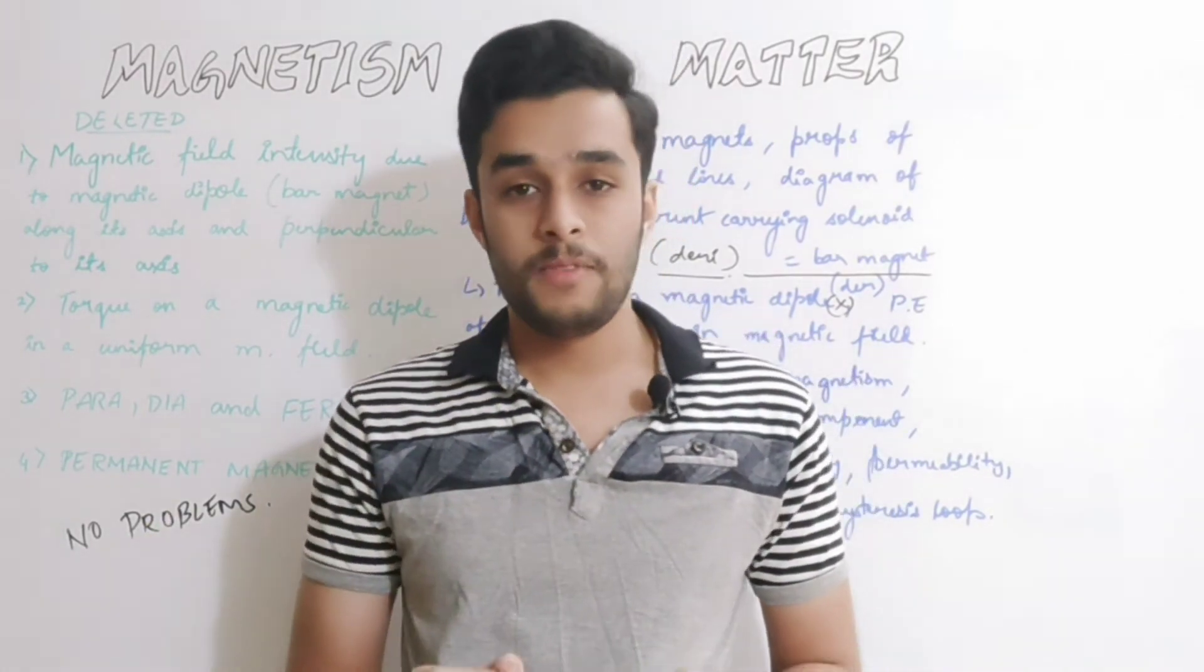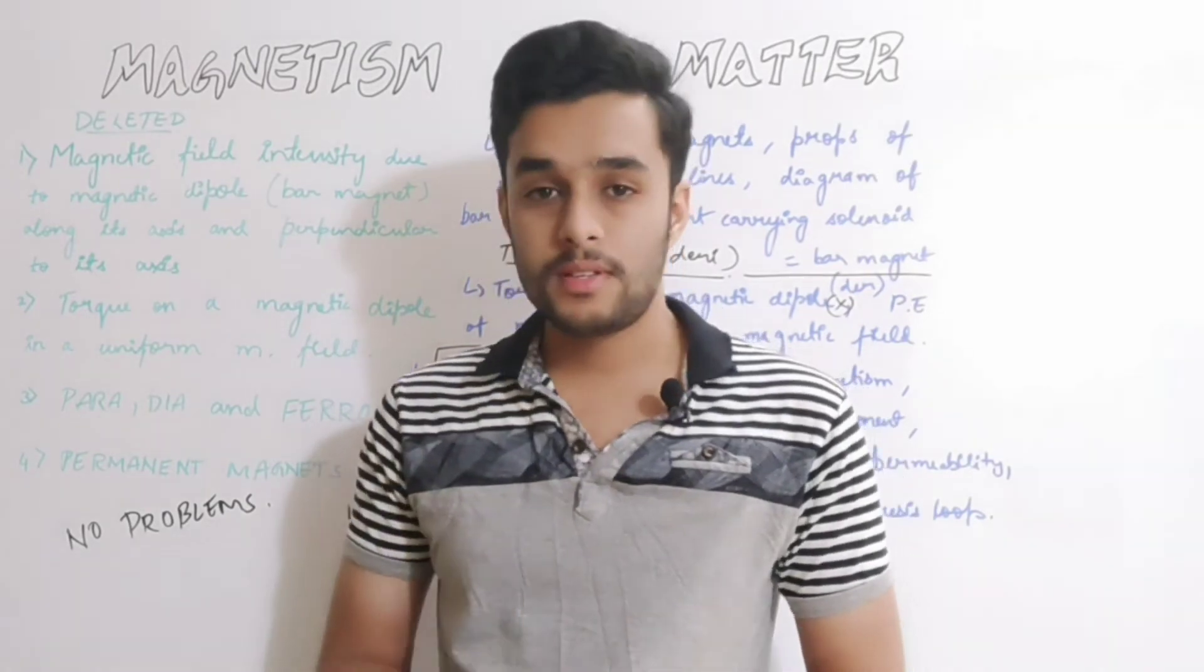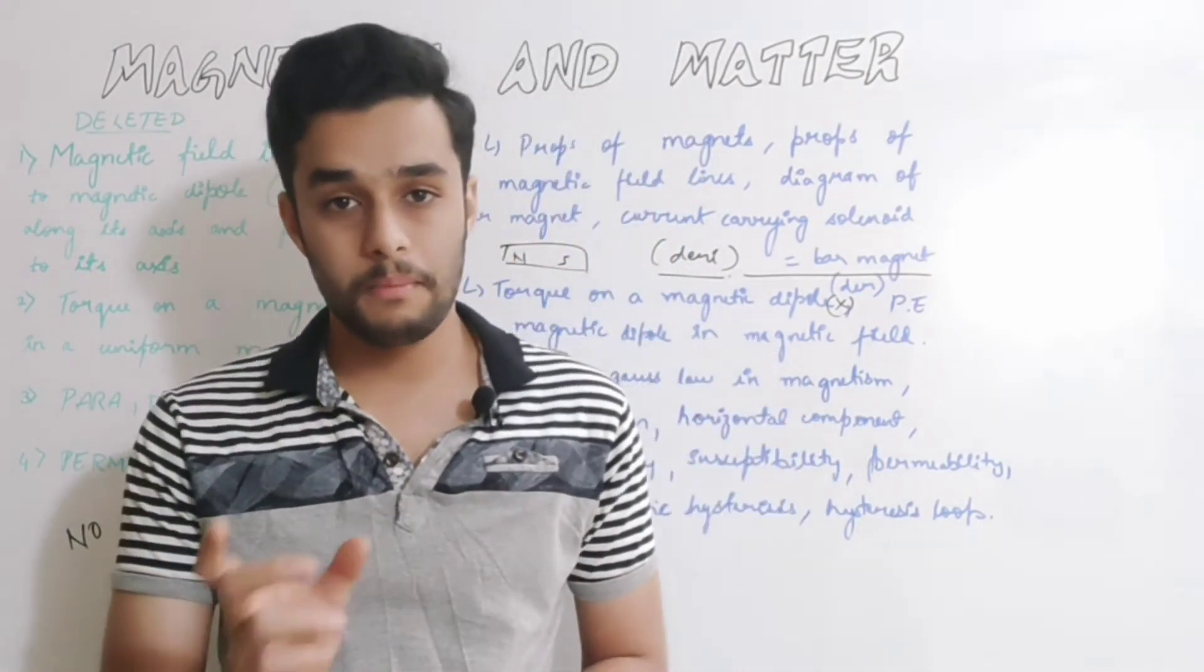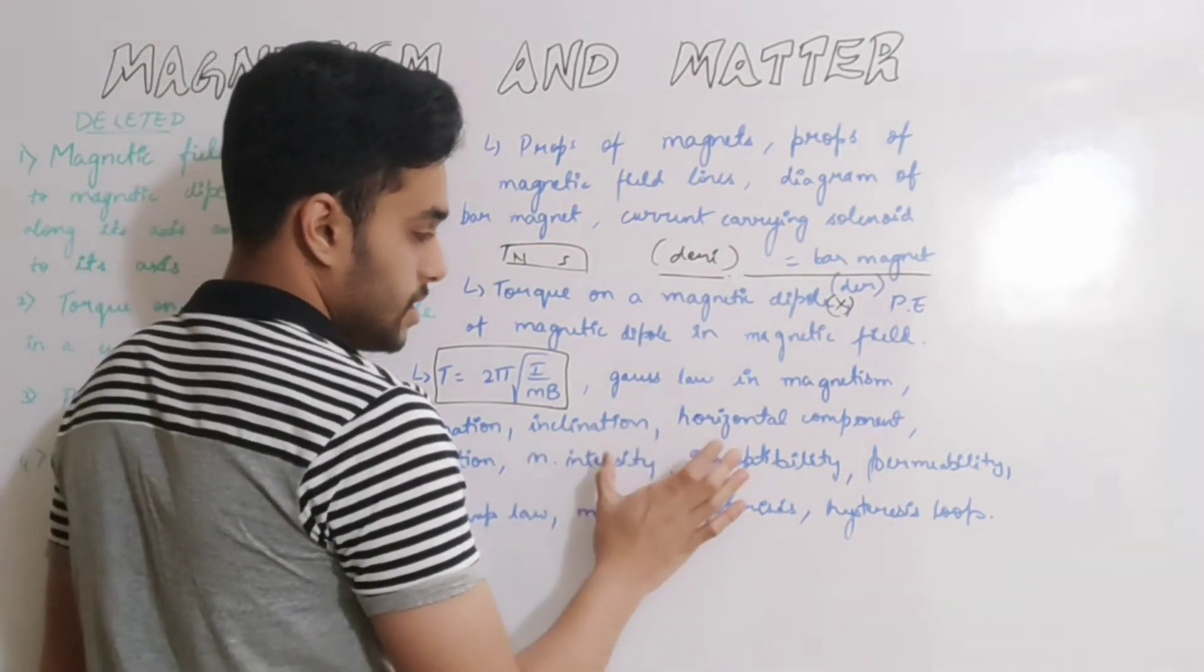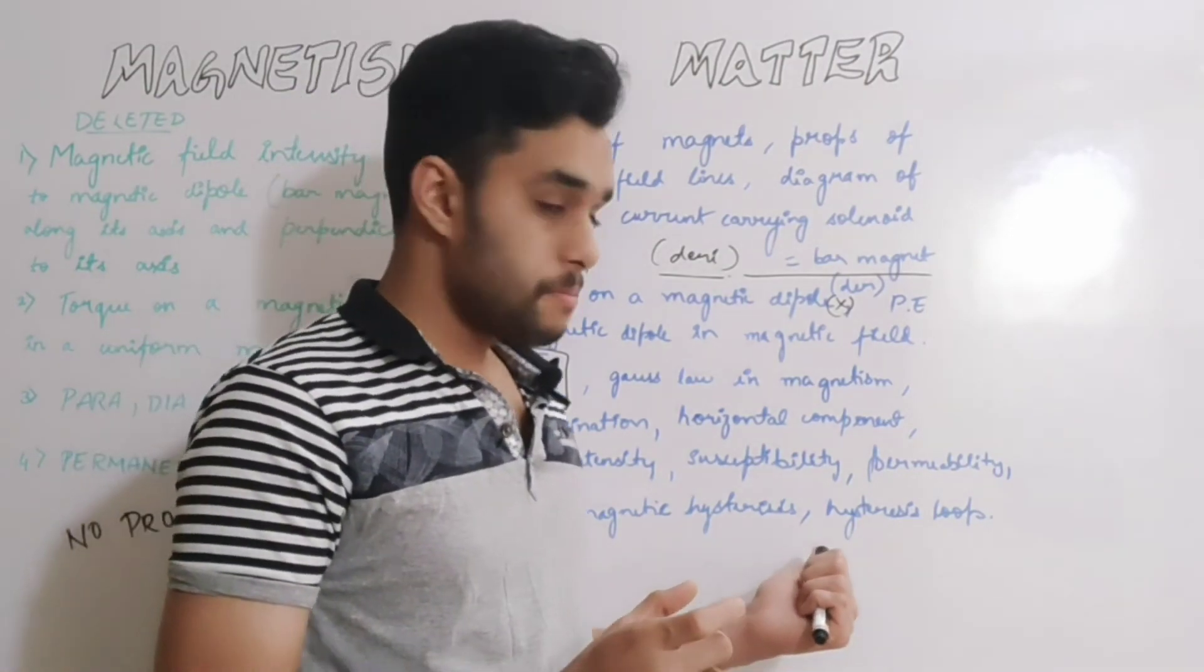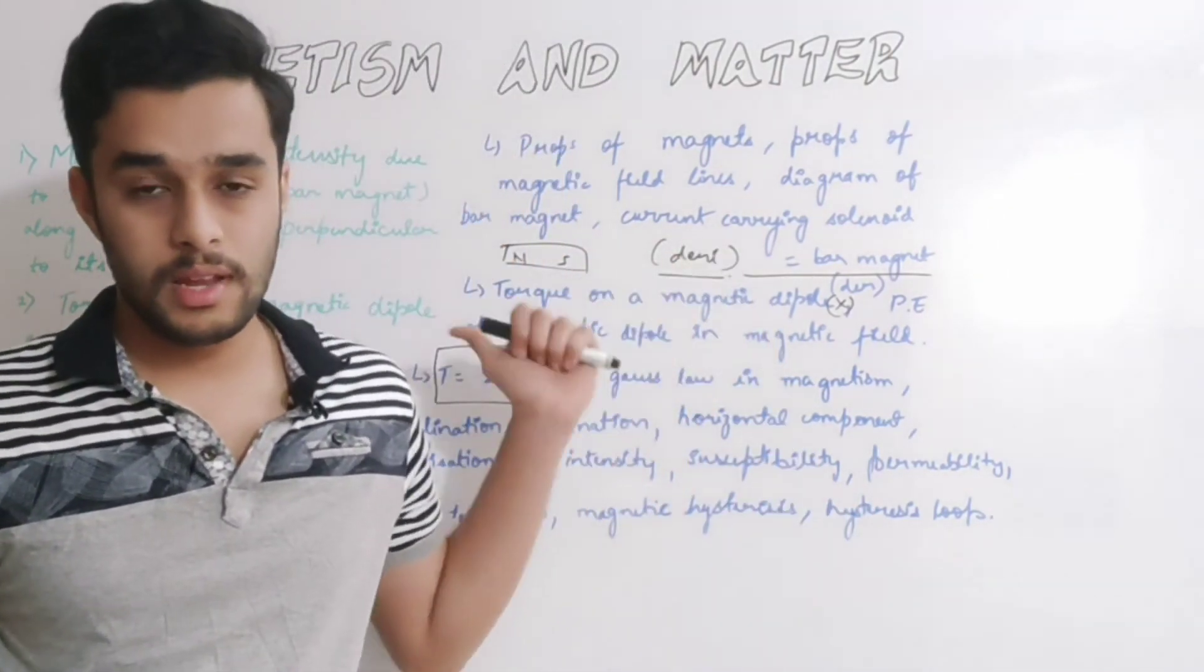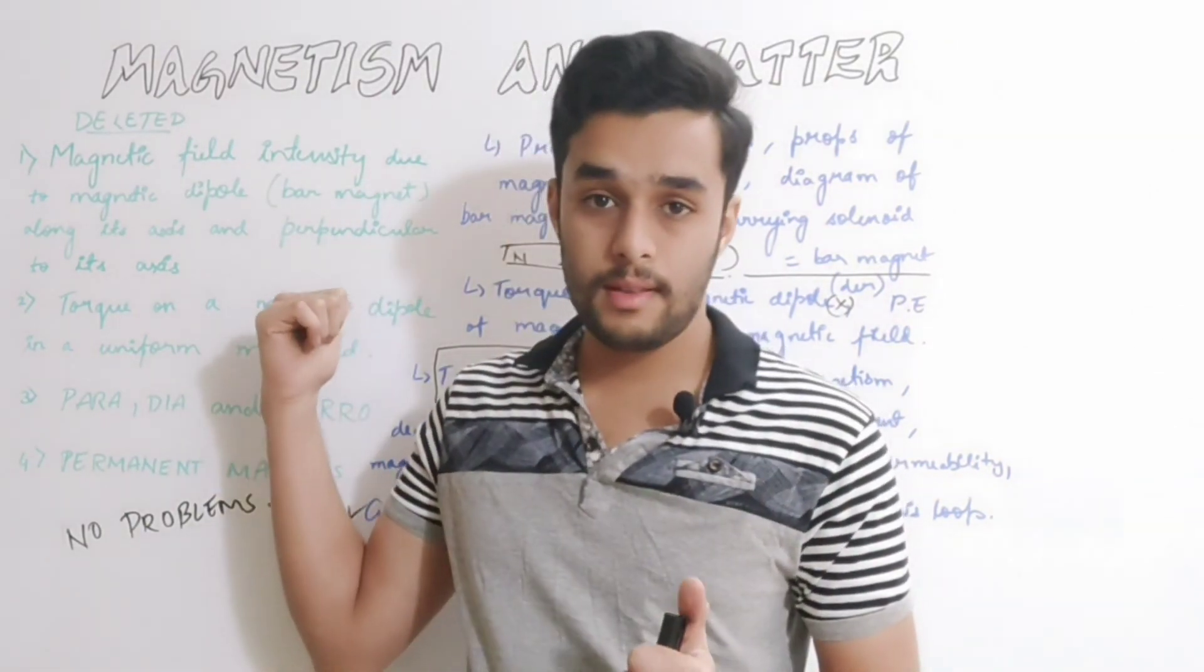For this chapter, basic definitions like inclination, declination, horizontal component - study these basic definitions well. If you prepare the entire portion properly, don't skip this chapter. It's not difficult to score. Just study the definitions and basics well.